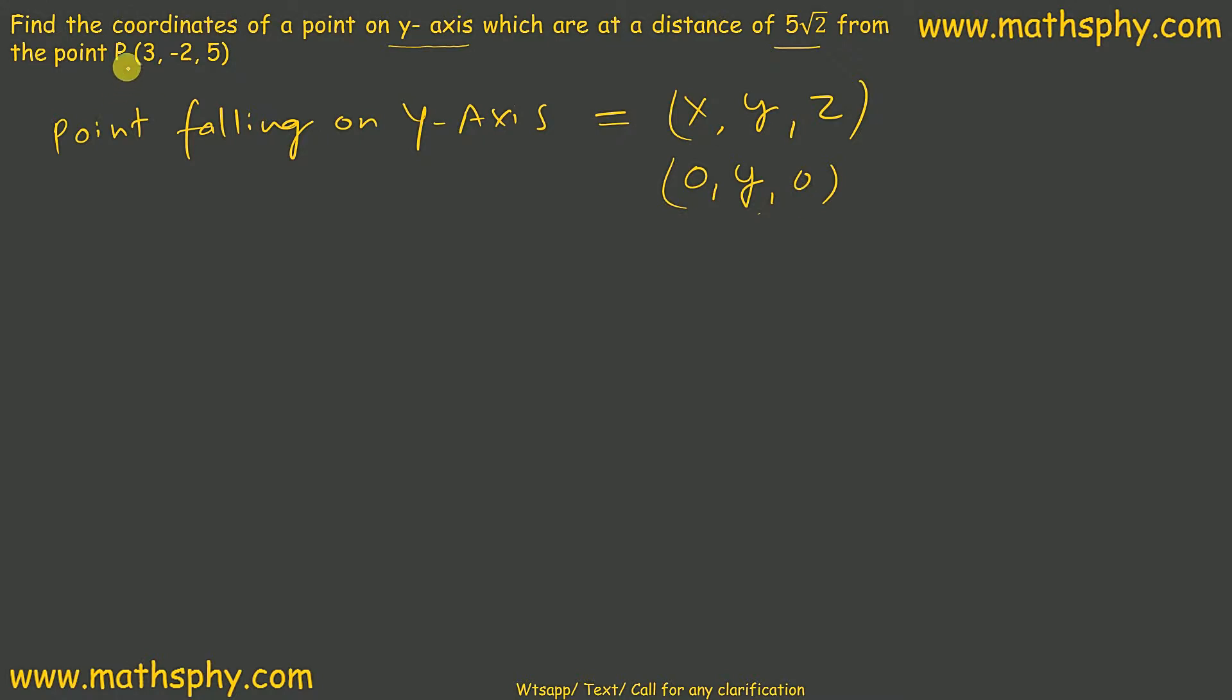Now it says distance from point P to this point is 5 root 2. So I will write point P would be 0 minus 3 whole square plus y minus negative 2 whole square plus 0 minus 5 whole square. And this distance is 5 root 2.